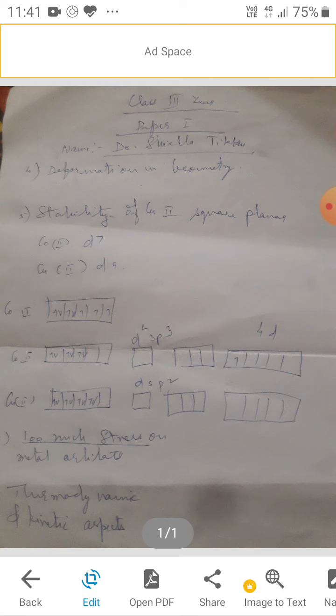Cobalt 2, jub aapna d7 state vatara hai, toh uska ek electron jump karke 4d orbital mein chala jata hai. Aur ye jo, iska jo complex banta hai, wo astha hi hota hai, kyonki usme se ek electron ko nikalna bahut aasan hota hai.